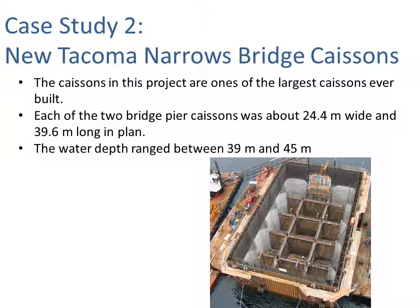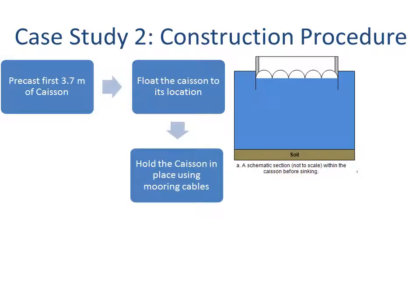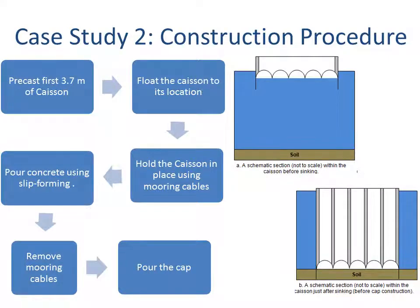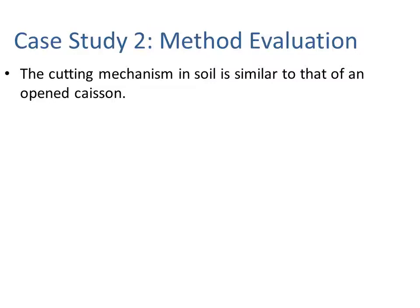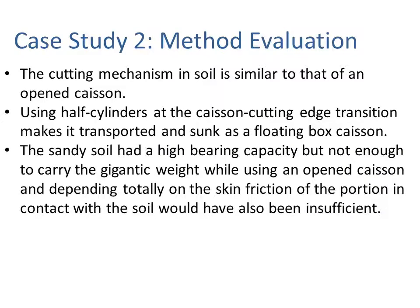The second case study is the New Tacoma Narrows Bridge, featuring some of the largest caissons ever built. Each of the two bridge pier caissons was approximately 24.4 meters wide and 39.6 meters long in plan, with water depths ranging from 39 to 45 meters. The construction sequence involved precasting the first 3.7 meters of caisson, floating it to location, holding it in place with mooring cables, pouring concrete using slip forms, removing the mooring cables, and pouring the cap.